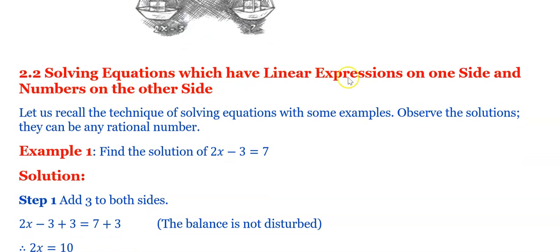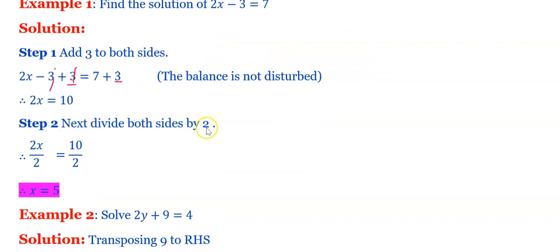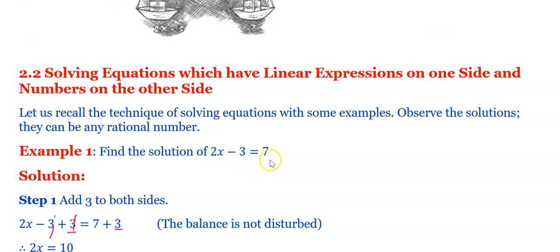We are solving equations that have a linear expression on one side and a number on the other side. For 2x minus 3 equals 7: first, add 3 to both sides — the plus 3 and minus 3 cancel, giving 2x equals 10. Then divide both sides by 2: the 2s cancel and we get x equals 5. Therefore, x equals 5 is the solution of 2x minus 3 equals 7.